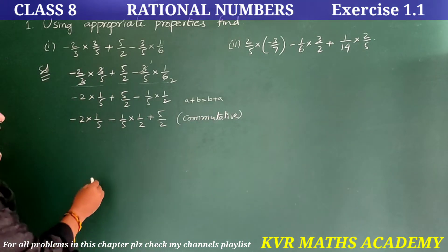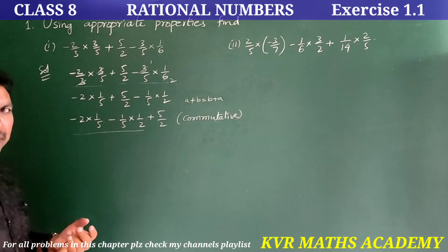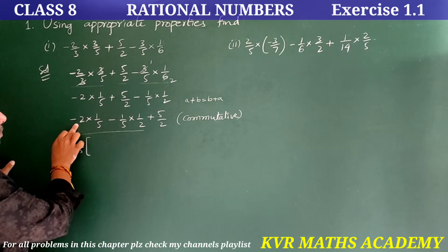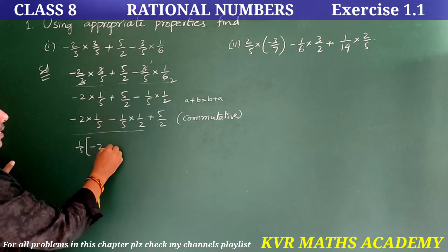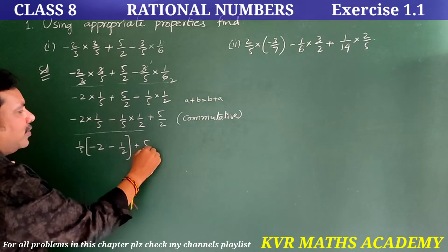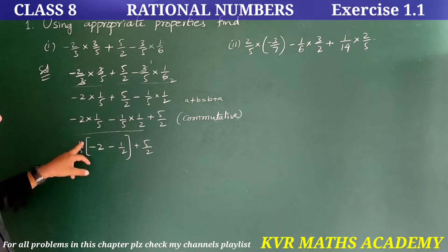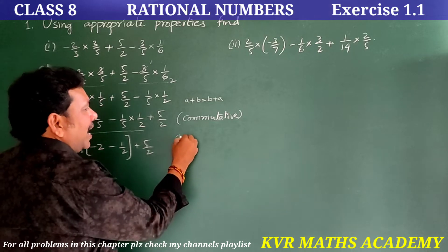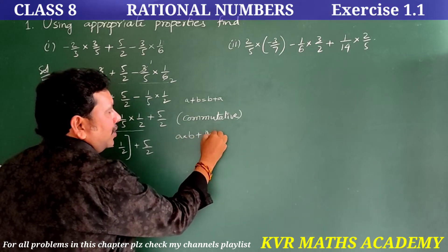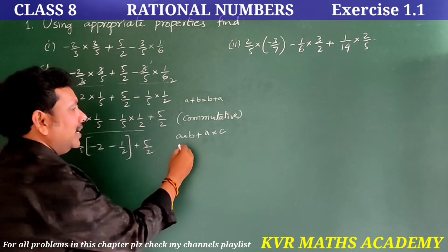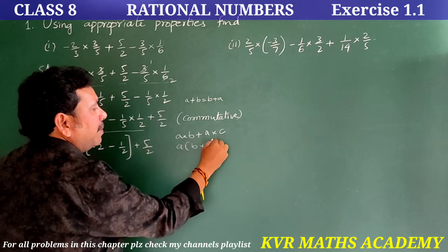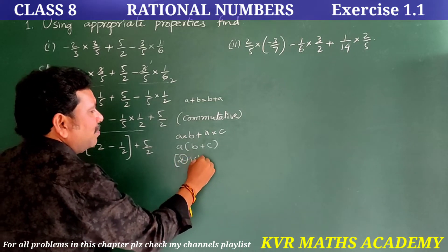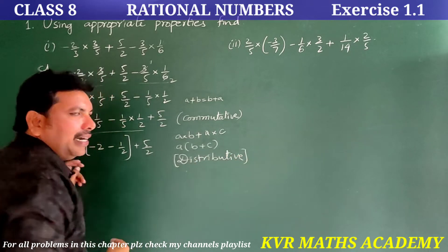In these two terms, 1 by 5 is the common factor. So take 1 by 5 as common. The remaining parts are: minus 2 and minus 1 by 2, plus 5 by 2. Here, A into B plus A into C can be written as A into (B plus C) — this is the Distributive Property.